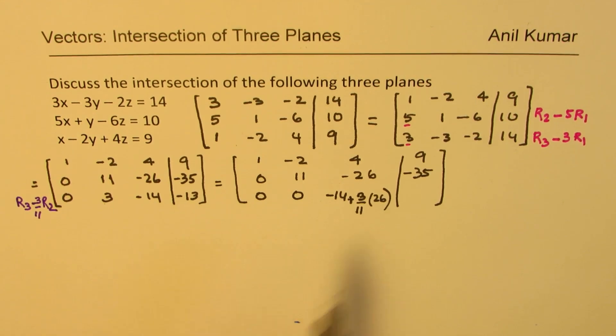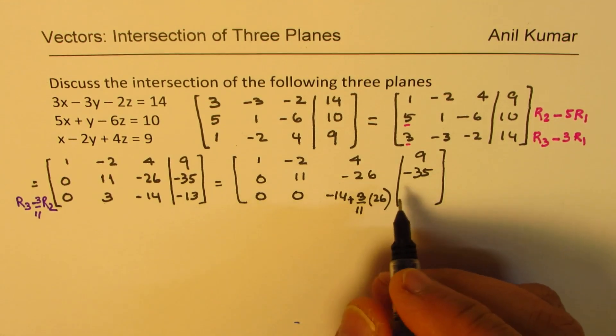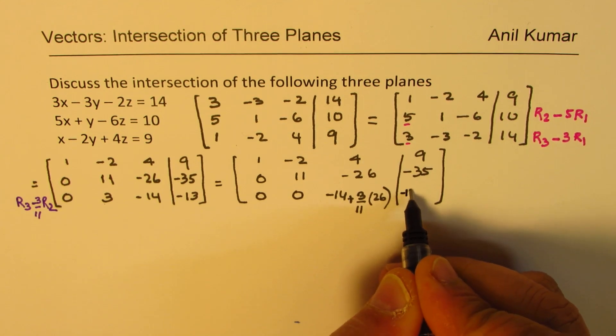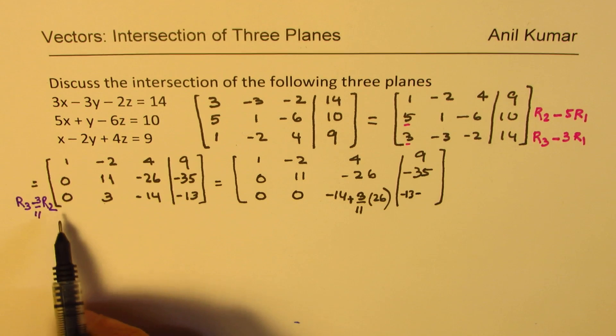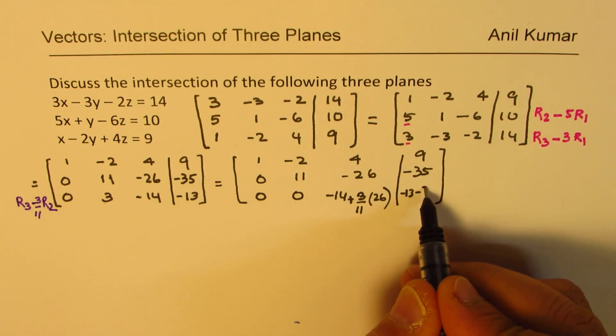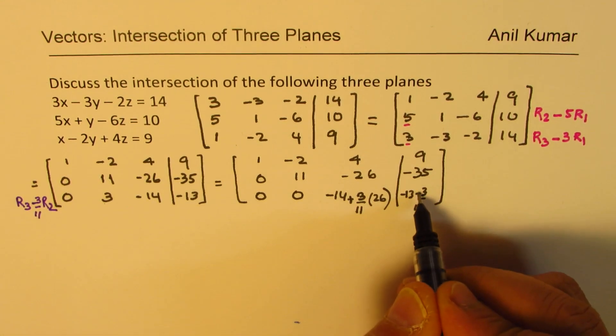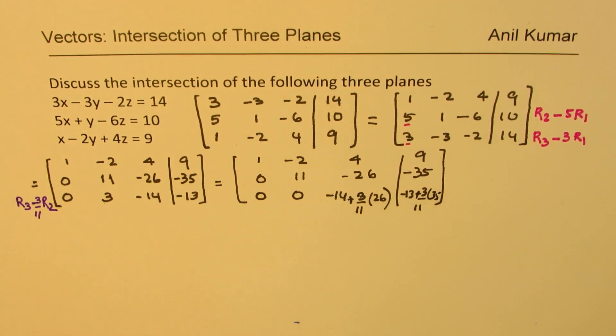On the right side, we have minus 13. So here, we have minus 13. And from this, we have to take away 3 over 11 times minus 35. So that makes it plus times 35. Is that clear to you? So that is what we get here.